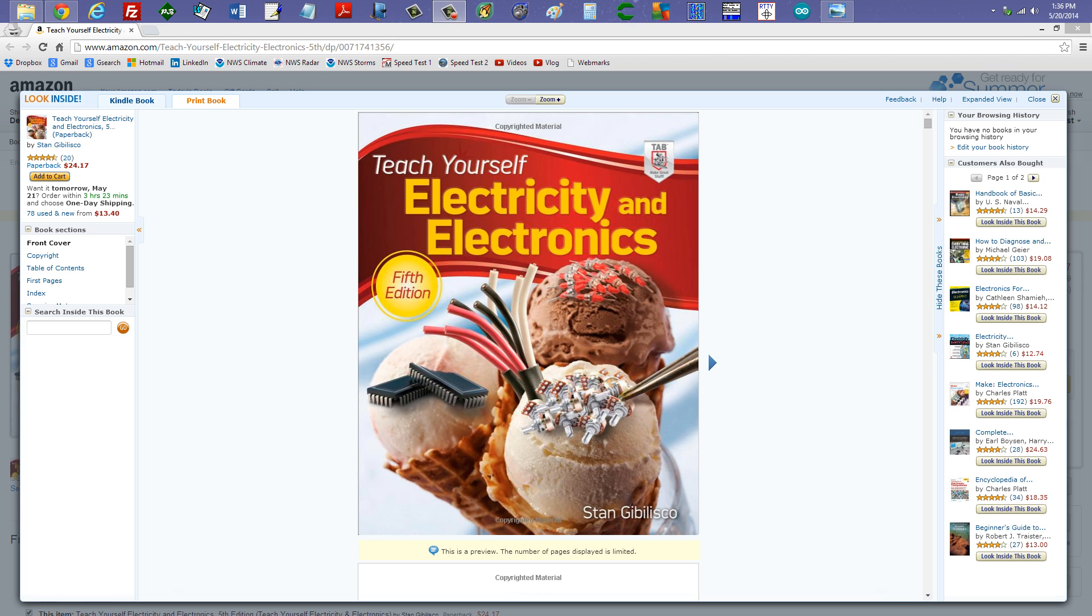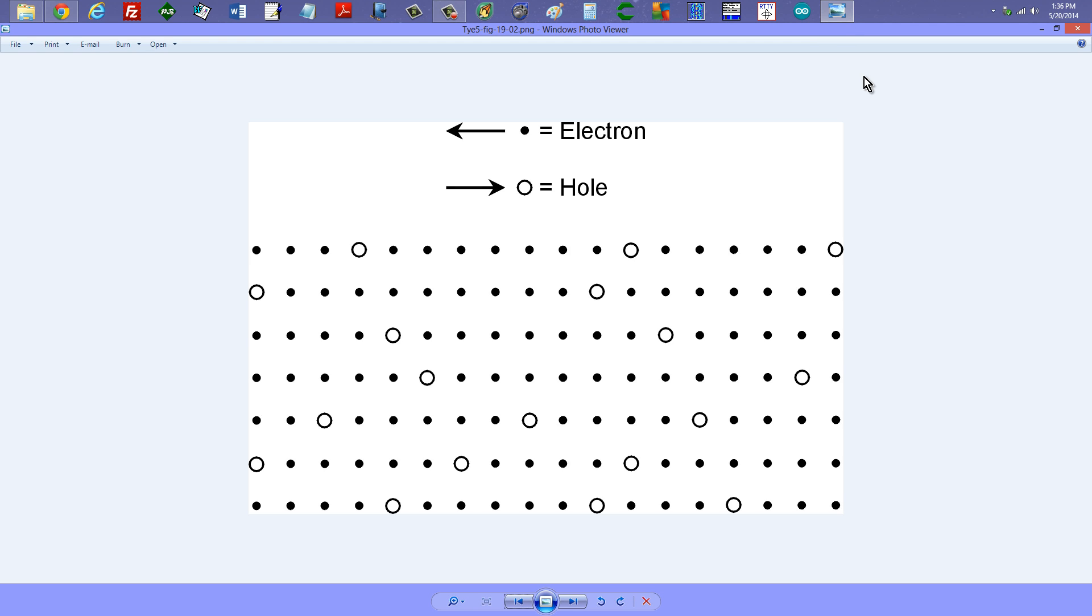I will provide a link to the Amazon page for this book in the description of this video. For right now, what I'd like to do is start out with a discussion of the flow of electrons versus holes in a semiconductor material.